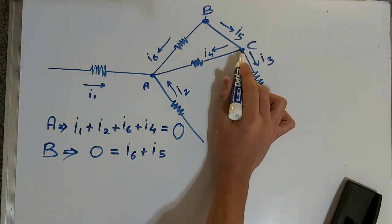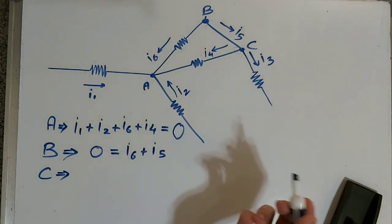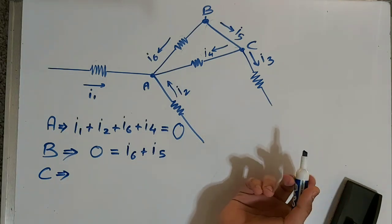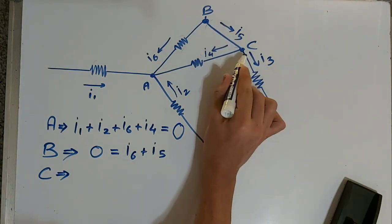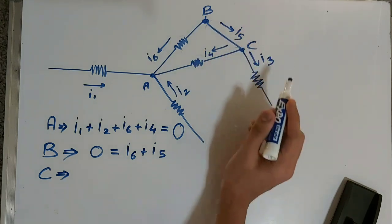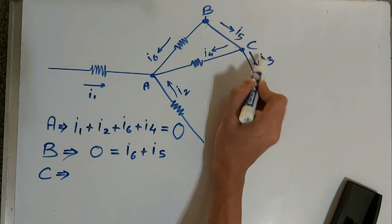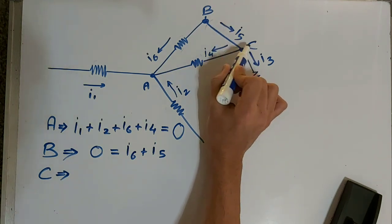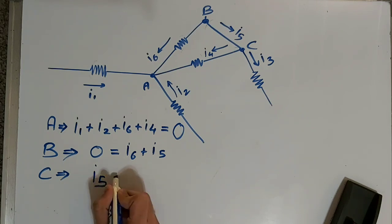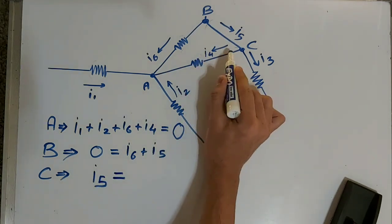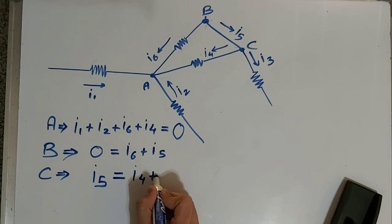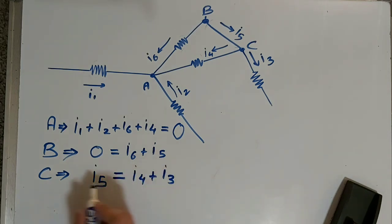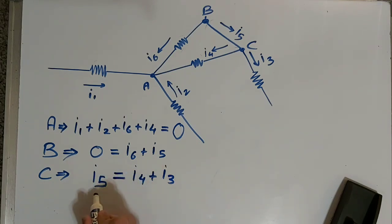Now let's do the KCL equation for junction C. The currents entering junction C should equal the currents exiting. I5 is coming towards C, so it's entering C. I4 and I3 are going away from C. So I5 equals the current exiting: I5 equals I4 plus I3. For junction C, the equation is I5 equals I4 plus I3.